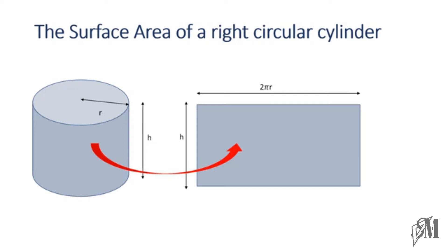The rectangle has height h and length 2πr. The reason we use 2πr is that the upper part of the cylinder is a circle, and the circumference of the circle is 2πr. So when it opens into a rectangle, the circumference of the top surface becomes the length of the rectangle. The area is therefore length × breadth = 2πrh.